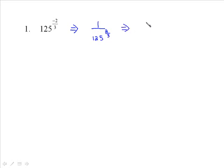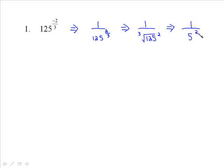At this stage you could push it through your calculator, but I'm also going to hold off and write this as 1 over the cube root of 125 squared. The cube root of 125 — what number times itself 3 times equals 125? The answer is 5. Then 5 squared gives you 1 over 25, and that's our answer.